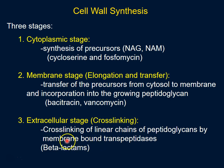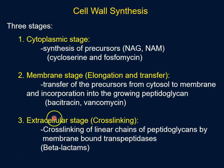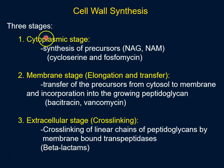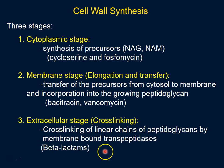Finally, we have an extracellular stage where cross-linking occurs — the neighboring glycans are cross-linked with each other by a peptide linkage. This stage is the target of all beta-lactams, as I will show you. Now let's go ahead and look at each of the stages in detail.